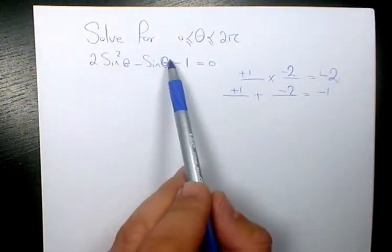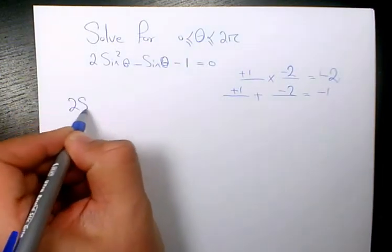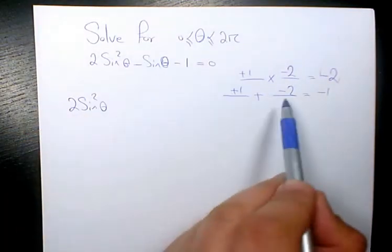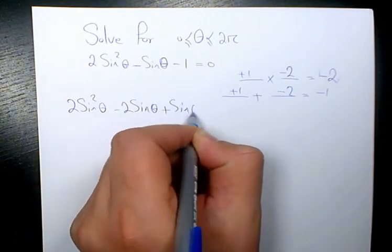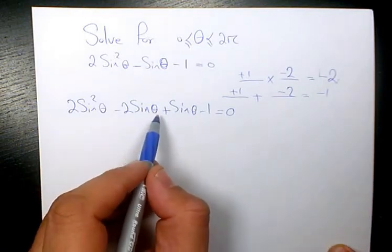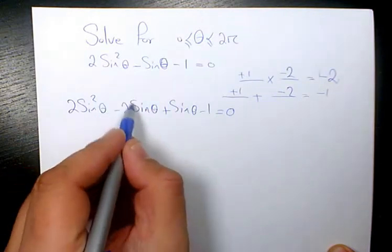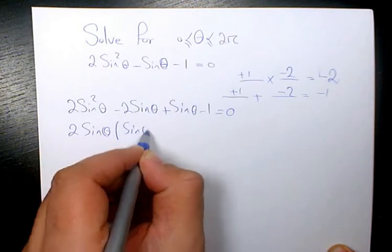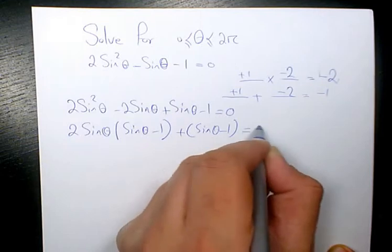Then I come here and rearrange this equation. It will be 2 sine squared theta. Instead of negative sine theta, I will write negative 2 sine theta plus sine theta minus 1 equals 0. Then I will have group factoring: 2 sine squared theta minus 2 sine theta, I factor 2 sine theta, that will be sine theta minus 1, plus sine theta minus 1 equals 0.